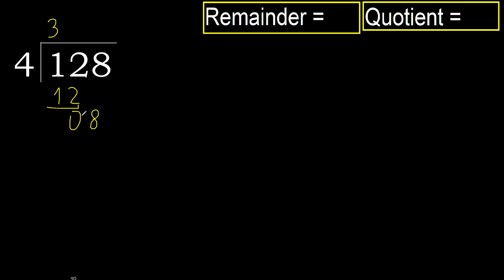Bring down 8. Eliminate 0 on this side — 8. 4 multiplied by 2 is 8, is not greater. Subtract 0, next.